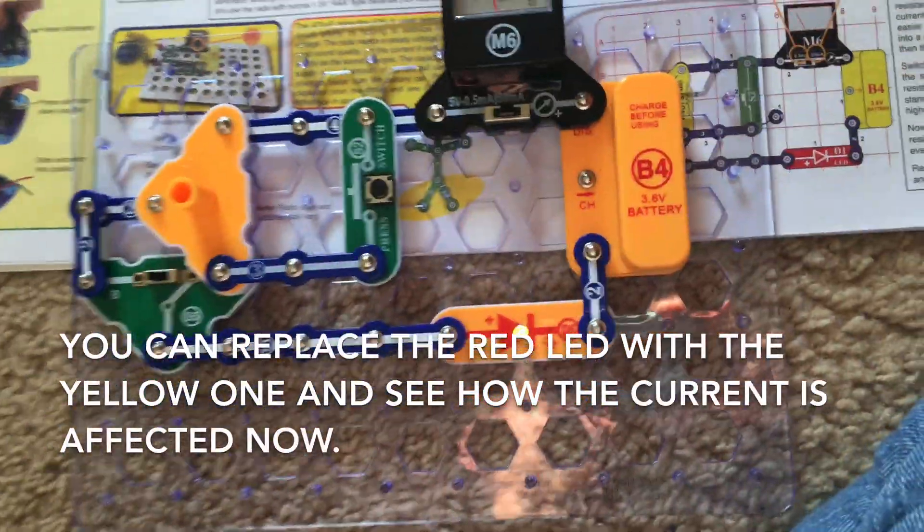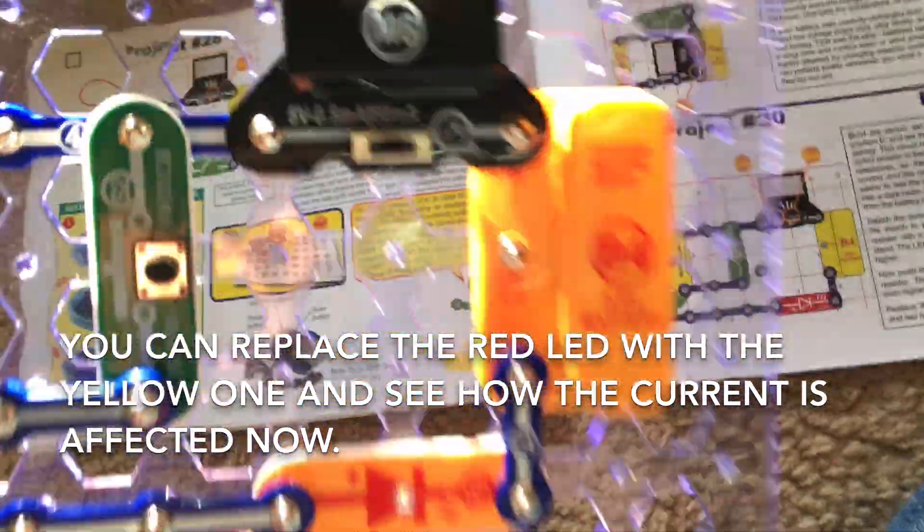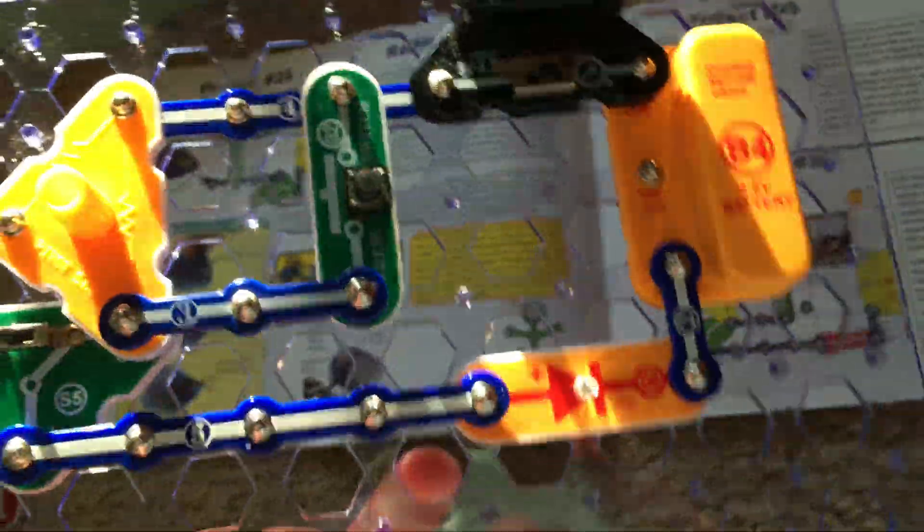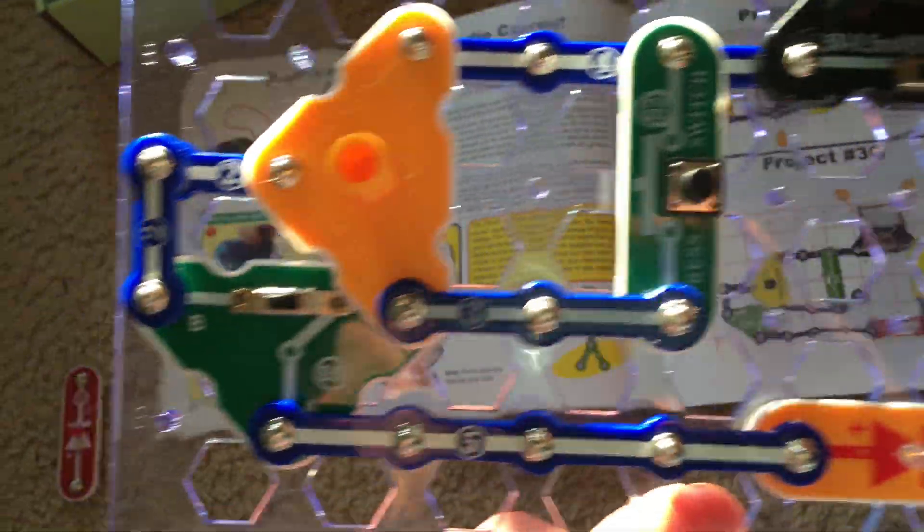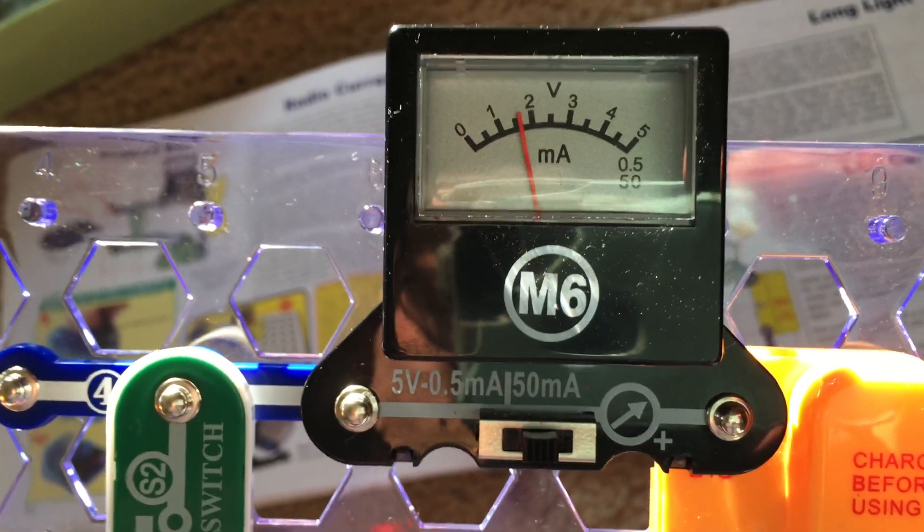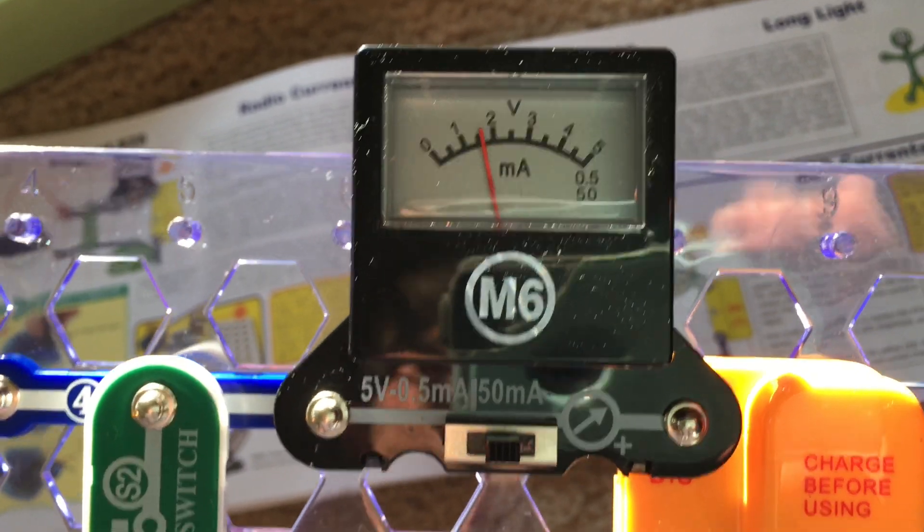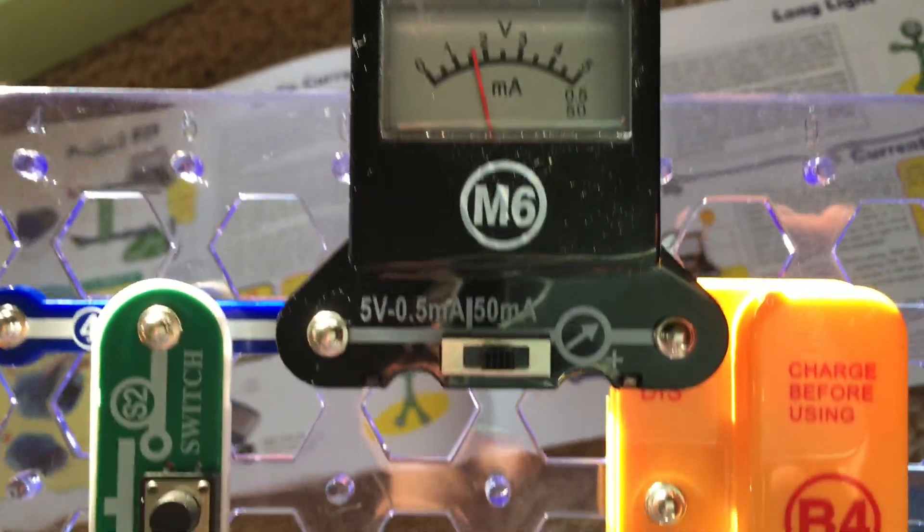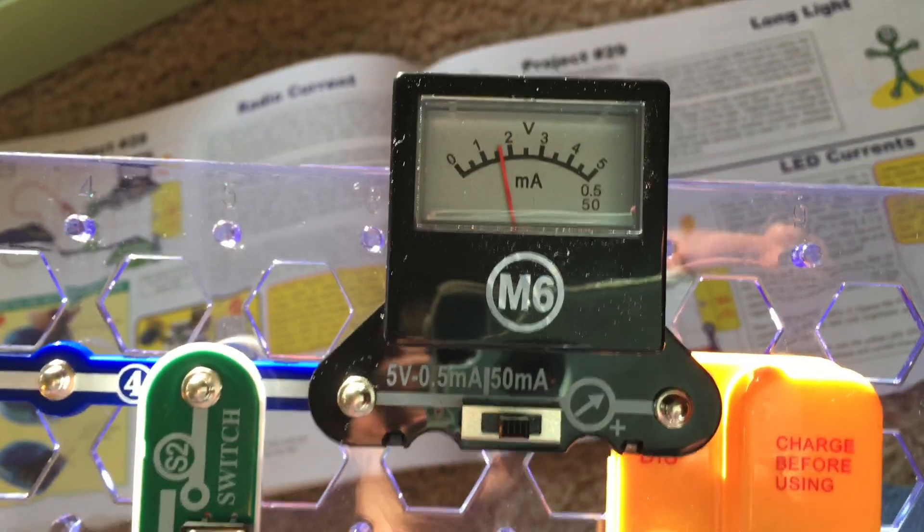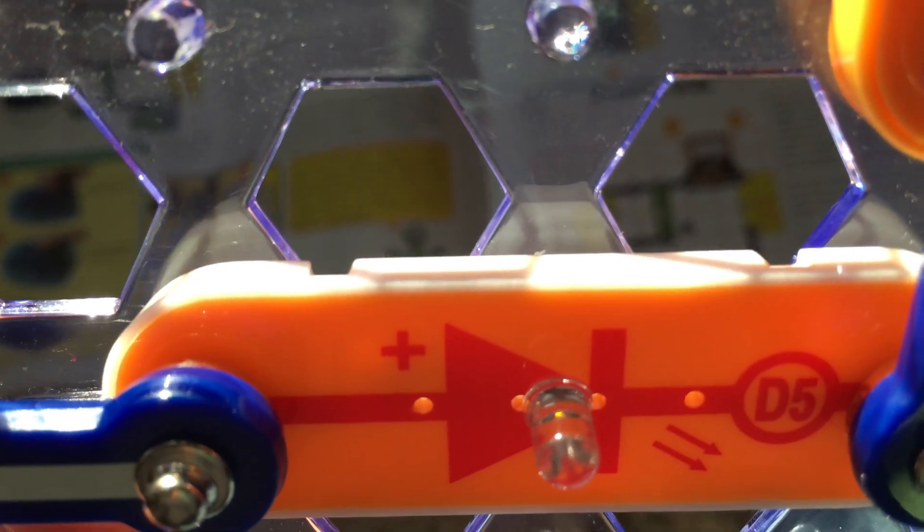We can replace the red LED with the yellow LED and see how it affects the current. Resetting the circuit to its original settings, the voltage meter on the 0.5 milliamp setting shows just over 0.15 milliamps and the yellow LED is very dim. You may not be able to even tell it's on.